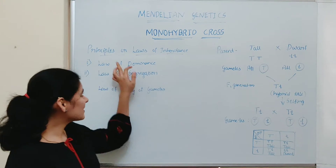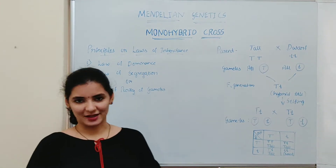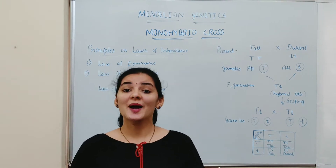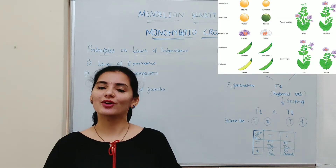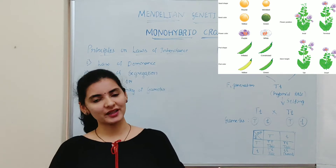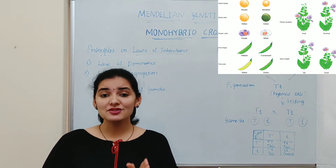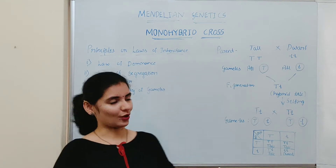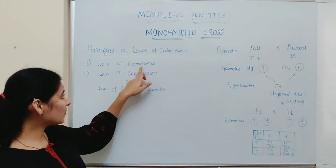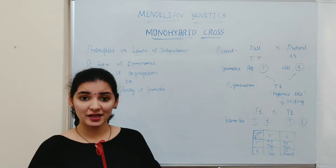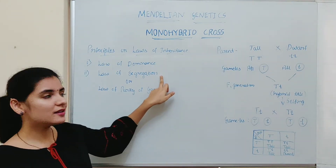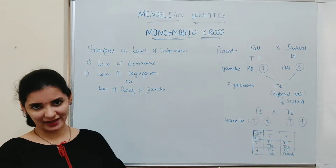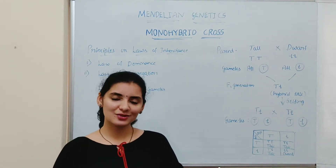Today we will discuss about principles or laws of inheritance. In the last video I discussed regarding the monohybrid cross. Mendel did monohybrid cross for all the seven characters that he has chosen from the garden pea plant. Based on the result of monohybrid cross, Mendel proposed mainly two laws: the law of dominance and law of segregation. Today these two laws together are known as principles of inheritance or laws of inheritance. We will discuss these two laws one by one.